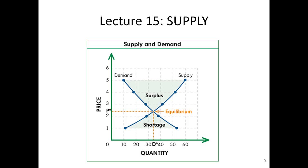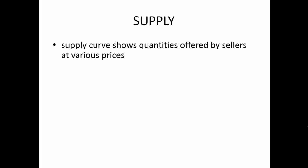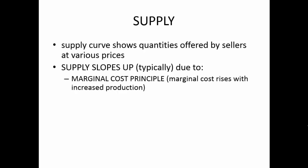Let's move right along and talk about supply. Supply will be pretty easy to talk about if we understand demand dynamics. Supply dynamics are of the same sort. A supply curve shows the quantities offered by sellers at various prices. Supply typically slopes up — it doesn't always, but it typically does slope up due to increased marginal costs.